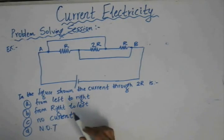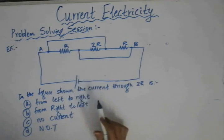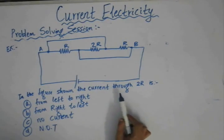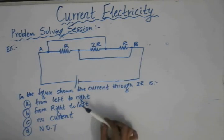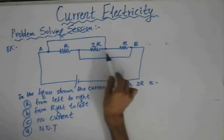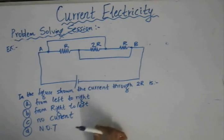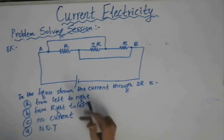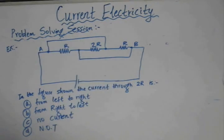In this problem, we have been given a circuit and we need to determine the direction of current flow across the 2Ω resistor. The options given are: from left to right, from right to left, no current flows, or none of these. To solve for the current flowing across the 2Ω resistor, we can reduce this circuit.